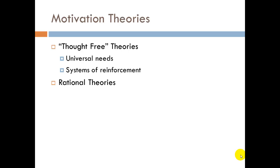Somewhat more recent are what I am calling rational theories. In these theories, human judgment is important — people evaluate their environment, and based on what they see, they make decisions about how to behave. Two key assumptions are: first, people operate in their own economic self-interest, driven by economic thought, always acting to maximize the rewards they seek. And second, people are able to make rational, almost mathematical judgments about how their environment is structured. So while thought is important, it is assumed to be unbiased and actually rather unemotional.